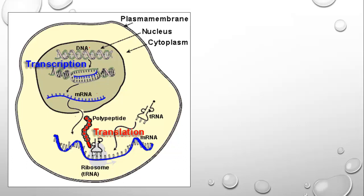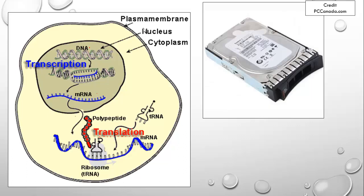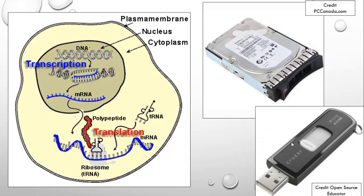Translation is where we actually make the protein that is the goal of this whole process. We use the illustration of a hard drive for the nucleus, where the DNA is kept. We make a copy of just a small amount of the DNA onto a flash drive — that's like the mRNA — which carries that information out of the nucleus to its destination: the ribosome.